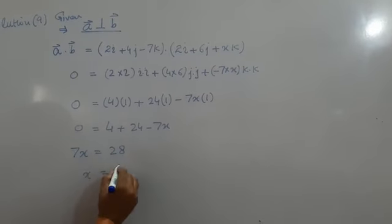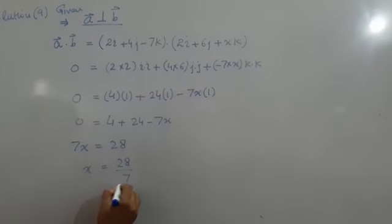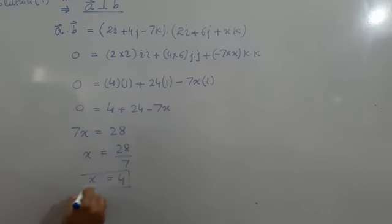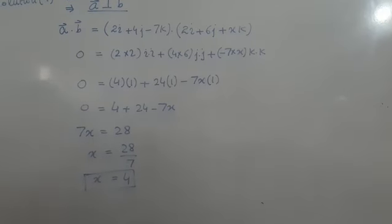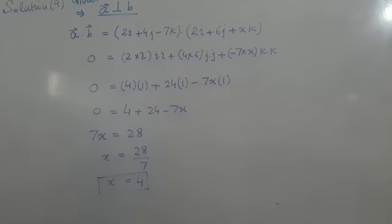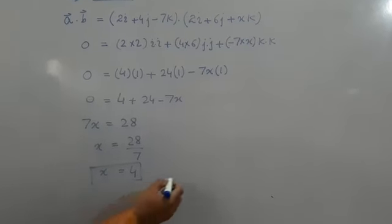4 plus 24 minus 7x equals 0. Minus 7x equals negative 28. Dividing by minus 7, x equals 4. The x value is 4.